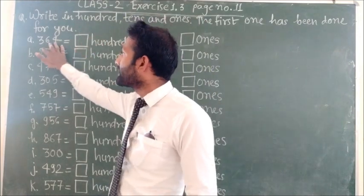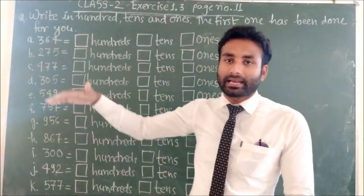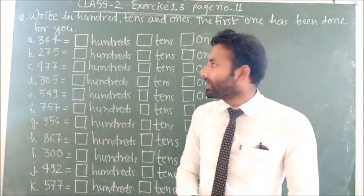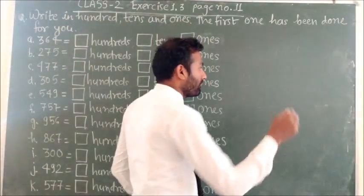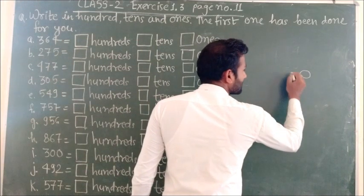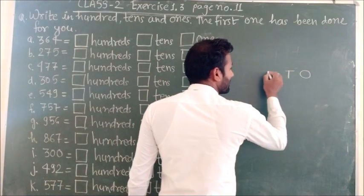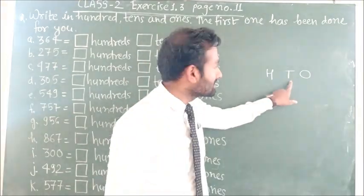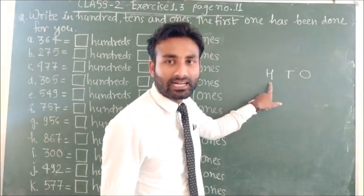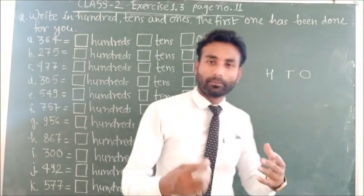Here we have numbers and we will write them according to place value. As we know, the first place is the ones place, second place is the tens place, and third place is the hundreds place.